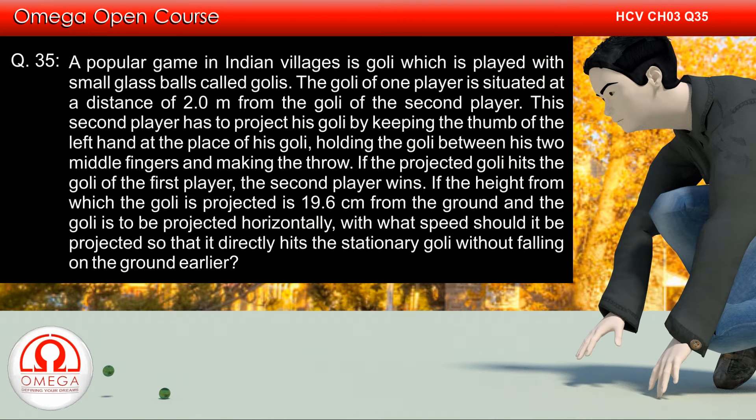If the projected goalie hits the goalie of the first player, the second player wins. If the height from which the goalie is to be projected is 19.6 cm from the ground and the goalie is to be projected horizontally, with what speed should it be projected so that it directly hits the stationary goalie without falling on the ground earlier?